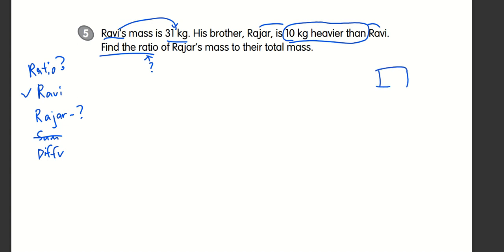So if I were to draw a model for this situation, Ravi is of a certain mass. That's 31 kilograms. That's Ravi. And Raja, being heavier than Ravi.